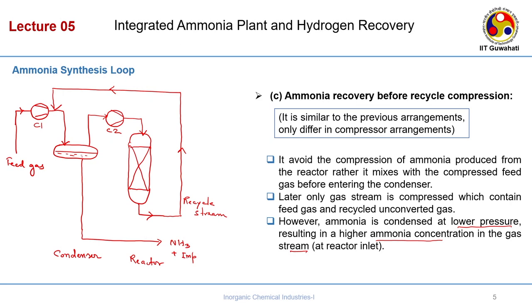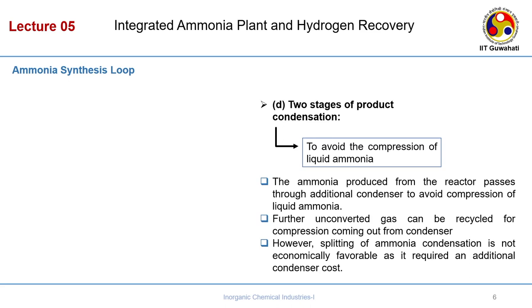A fourth configuration uses two stages of condensation to avoid compression of liquid ammonia. The ammonia from the reactor passes through an additional condenser to avoid compressing liquid ammonia, and unconverted gas can be recycled for compression coming out from the condenser. However, splitting ammonia condensation into two stages is not economically feasible because it requires an additional condenser, increasing capital cost — although recurring cost will be less.